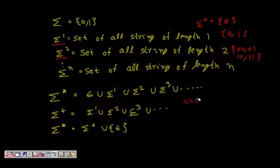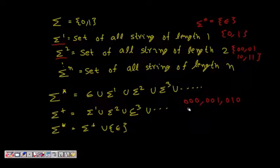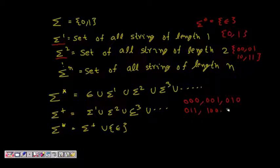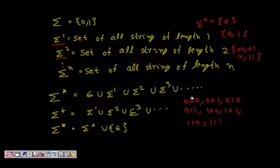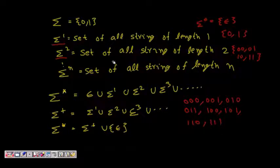Sigma^3 over {0,1} contains: 000, 001, 010, 011, 100, 101, 110, 111. In general, sigma^n is the set of all strings of length n taken from the alphabet.